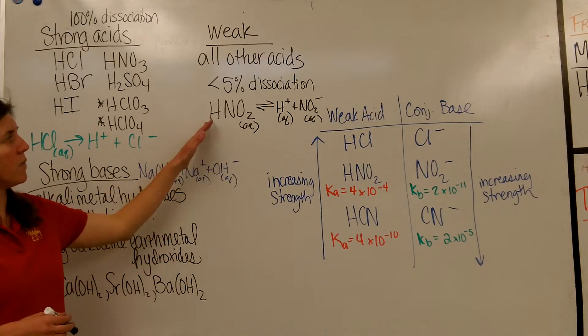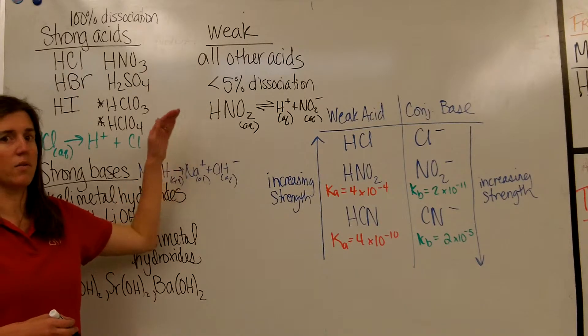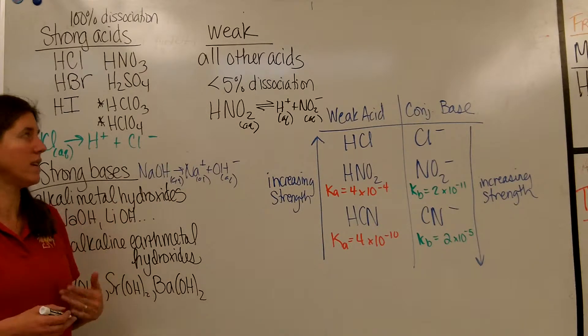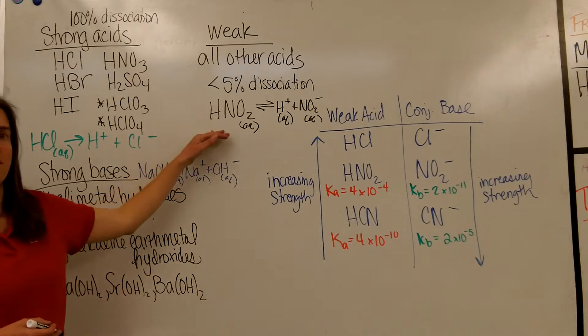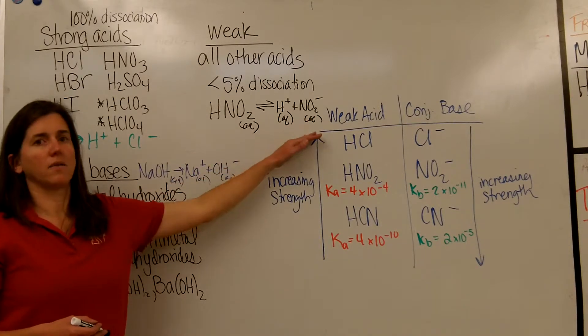Hence, when you look at a K-value for the dissociation of a weak acid in water, you will find the K-value is less than 1, meaning its reactants favored. So at equilibrium, you're going to have more of this form of your acid than the ionized form.